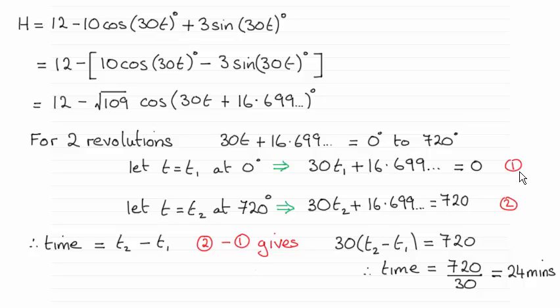And then there'll be another time that it had completed two revolutions where it had turned 720 degrees and I called that time t2. Substitute it back into this equation and equaled it to 720.